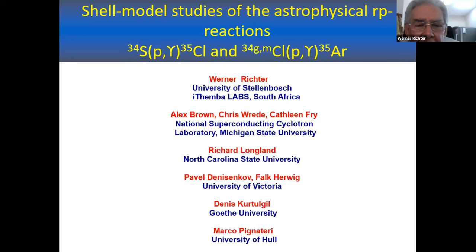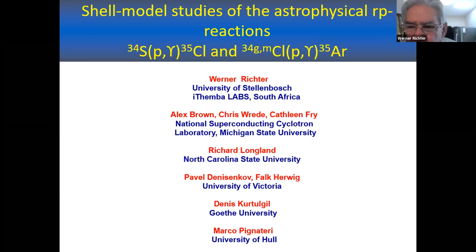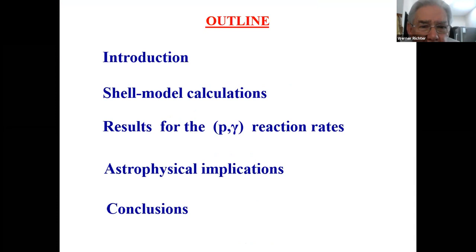We have quite a few collaborators or authors on this paper, and the reason for that is one can almost divide the project in two parts — one involved with the shell model mainly, and one with astrophysical implications. So the first five authors were mainly involved with the shell model, and the second five authors mainly with astrophysical implications.